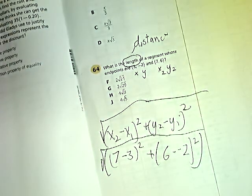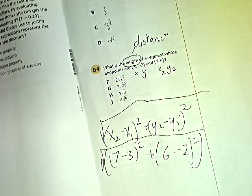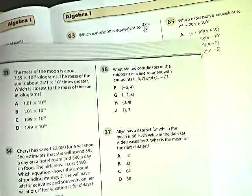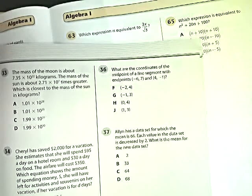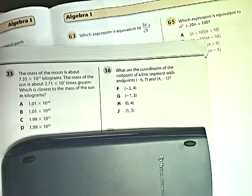Don't get all weirded out by everything. The problem you're going to do, and you're going to have about two minutes to do it, is on this other page, number 36. What are the coordinates of the midpoint of a line segment with points negative six, seven, and four, negative one? These are the coordinates for the midpoint, so make sure you use that formula and not the distance.